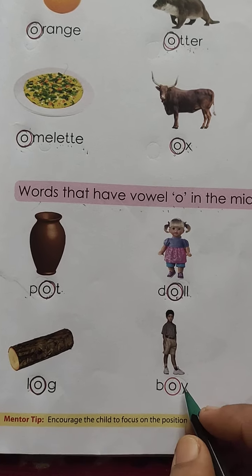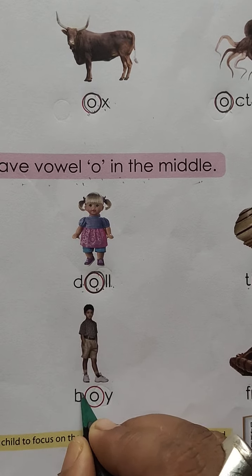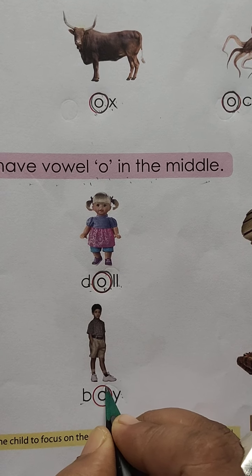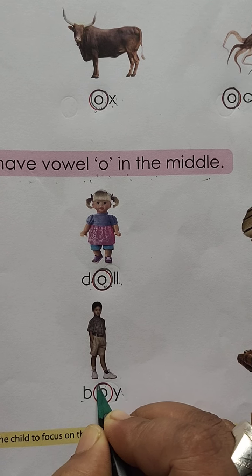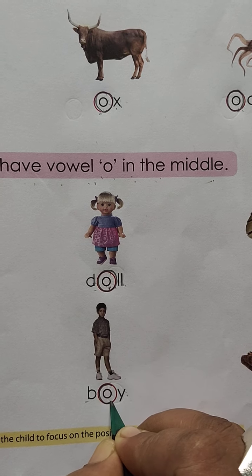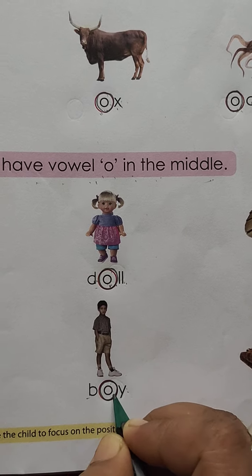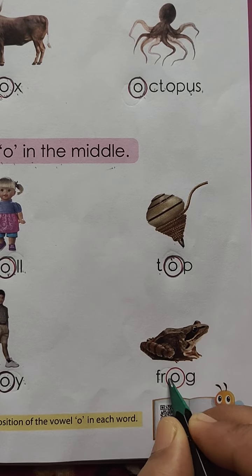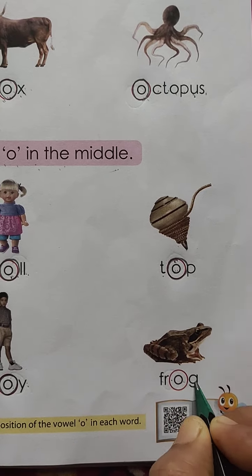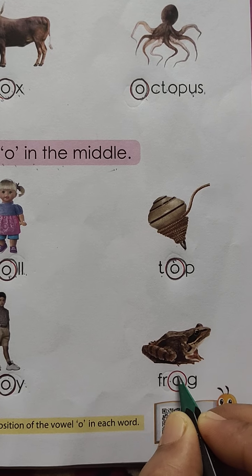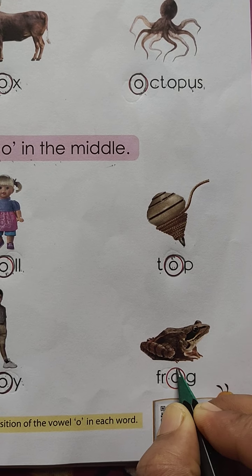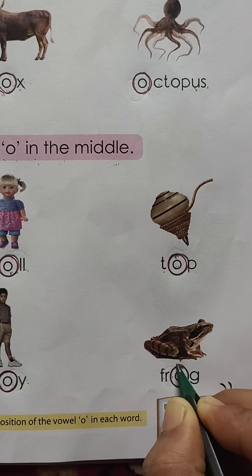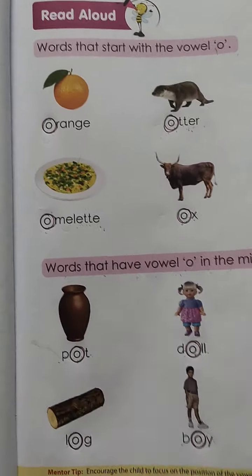Circle the vowel O in the middle. F R O G — frog. Circle the vowel O. So students, read these words.